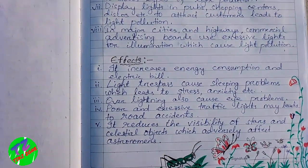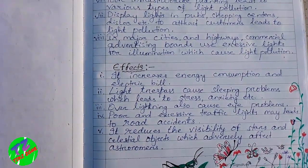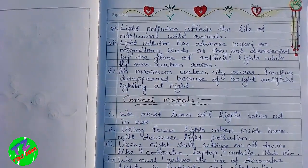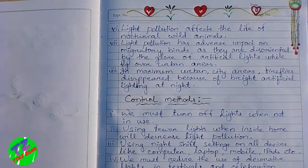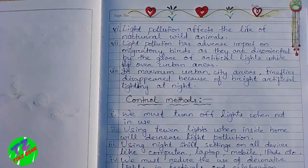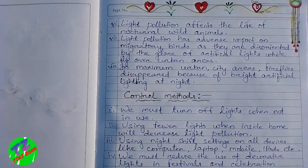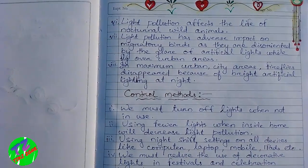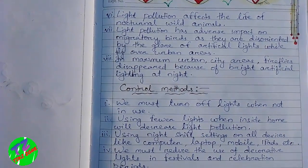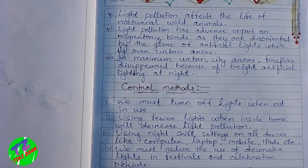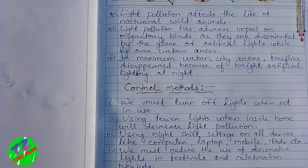Light pollution reduces the visibility of stars and celestial objects, which adversely affects astronomers. It also affects the lives of nocturnal wild animals — animals that move at night, like bats. Light pollution has an adverse impact on migratory birds, as they are disoriented by the glare of artificial lights while flying over urban areas. In many urban areas, fireflies have disappeared because of bright artificial light at night.